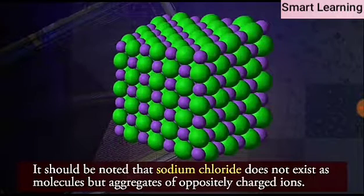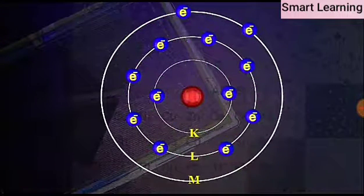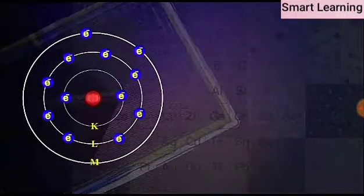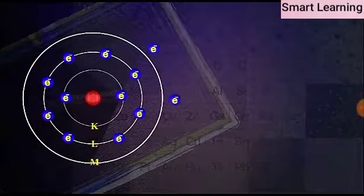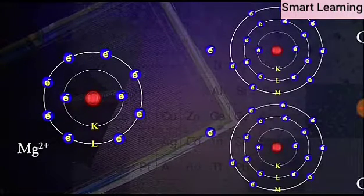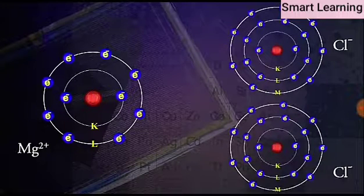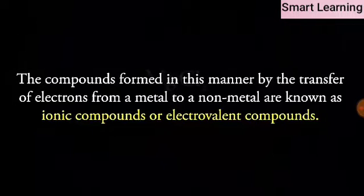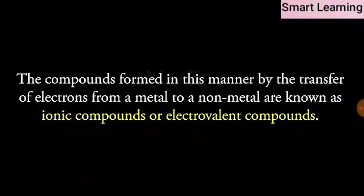It should be noted that sodium chloride does not exist as molecules but aggregates of oppositely charged ions. Let us see the formation of one more ionic compound, magnesium chloride. Here, magnesium loses 2 electrons to form Mg2+ ions. Chlorine accepts electrons to form chlorine ions. Oppositely charged magnesium and chlorine ions join together to form MgCl2 compound. The compounds formed in this manner by the transfer of electrons from a metal to a non-metal are known as ionic compounds or electrovalent compounds.